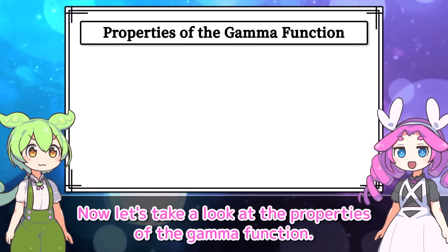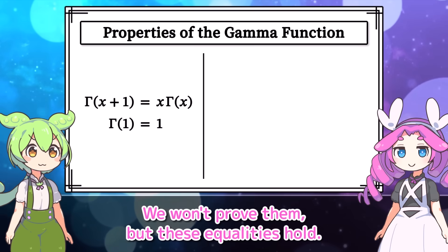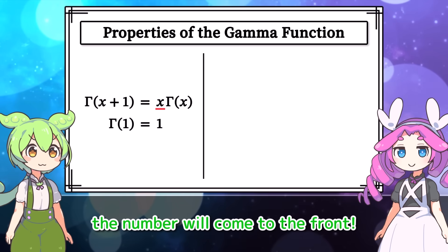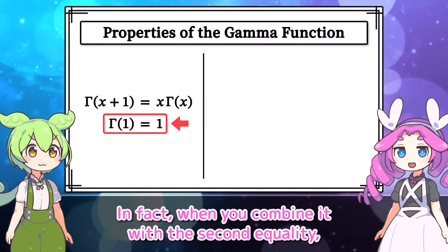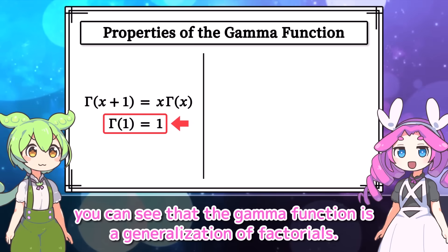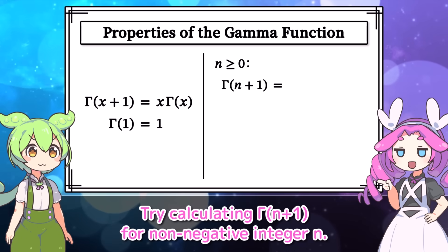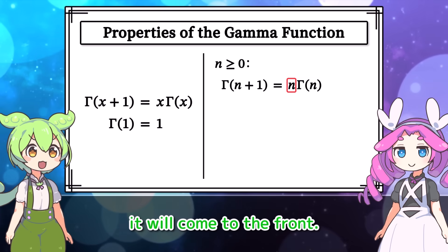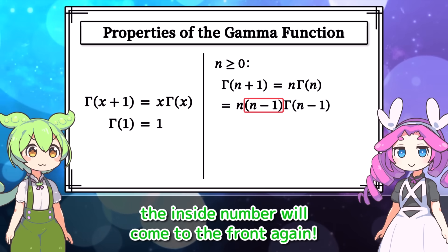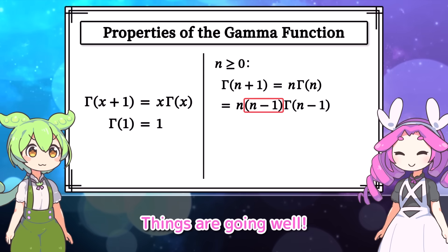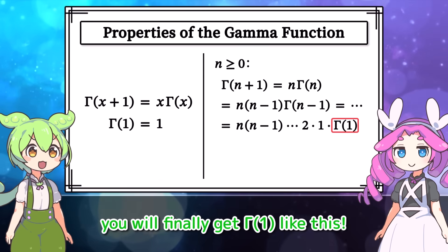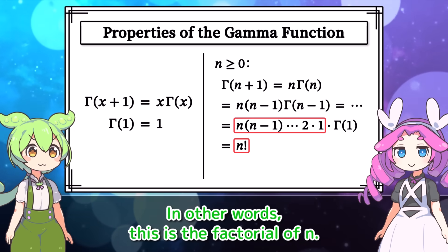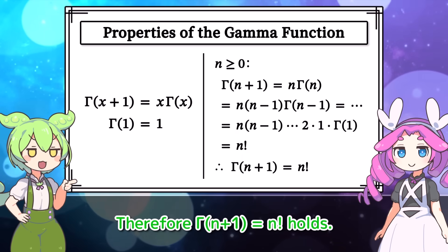Now let's look at the properties of the gamma function — we won't prove them, but these equalities hold. The first equality states that if you subtract 1 from the inside number, it will come to the front. When you combine it with the second equality, you can see that the gamma function is a generalization of factorials. For non-negative integer n, calculating gamma of n plus 1: subtracting 1 from the inside brings it to the front repeatedly, until you finally get gamma of 1, which equals 1. Therefore, gamma of n plus 1 equals n factorial.